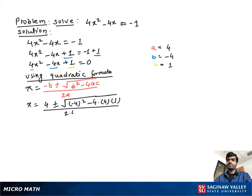We get x = (4 ± √(16 - 16)) / 8, which simplifies to x = (4 ± 0) / 8.